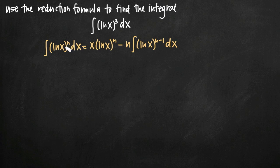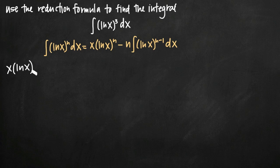Let's take a look at how this is going to work. Our value of n is 3 because ln of x is raised to the third power. We're going to be plugging 3 in for n wherever we see n on the right-hand side, and x will just stay as it is. So the reduction of our original integral — the quantity ln of x to the third power — will equal x times the natural log of x raised to the 3rd, minus 3 times the integral of the natural log of x to the n minus 1 power. Since n is 3, we get 3 minus 1, which gives us ln of x squared dx.